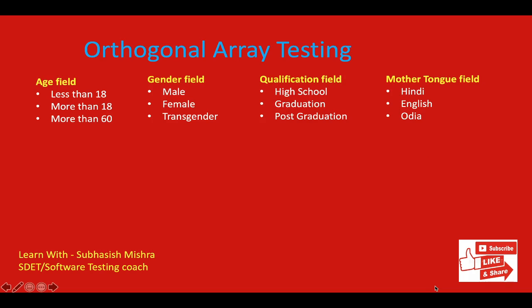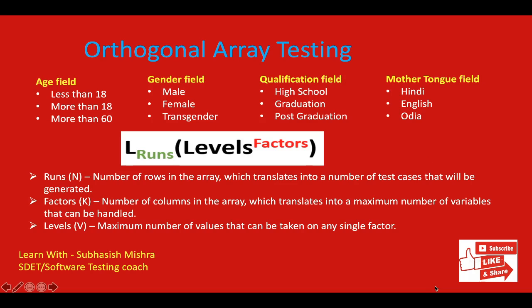Let's see how we can do this. Here you can see the formula for calculating the orthogonal array — what is L, what is RON (runs), and what are labels and factors. RON means number of rows in the array, which translates into the number of test cases generated. Factor means number of columns in the array, which translates into the maximum number of variables that can be handled. Labels means the maximum number of values that can be taken on any single factor.